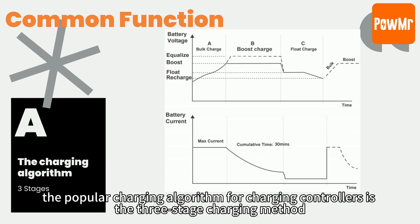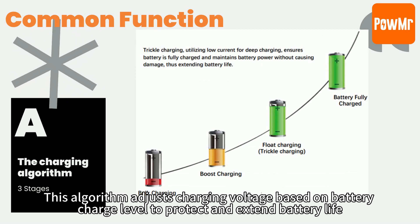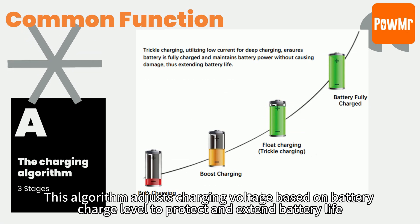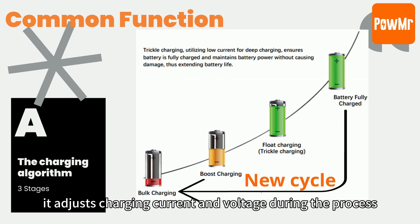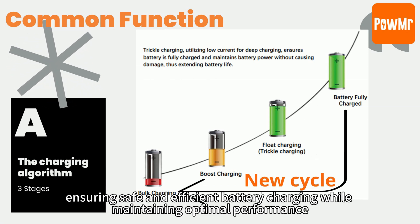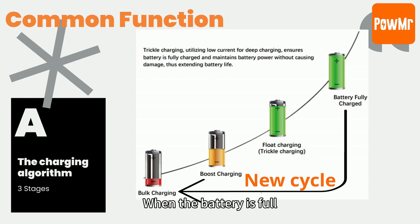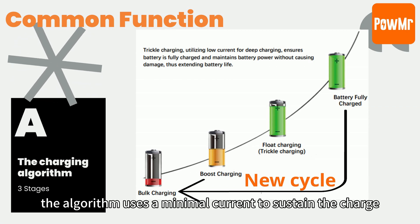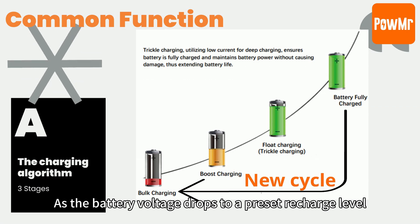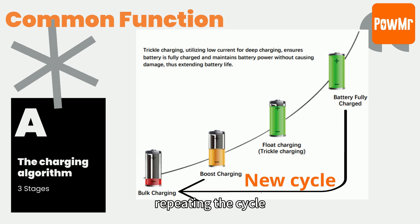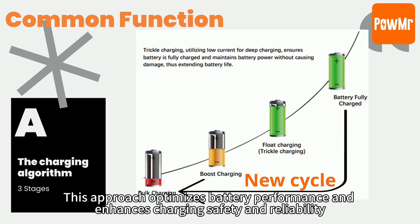The popular charging algorithm for charging controllers is the three-stage charging method. This algorithm adjusts charging voltage based on battery charging level to protect and extend battery life. By presetting charging voltage, it adjusts charging current and voltage during the process, ensuring safe and efficient battery charging while maintaining optimal performance. When the battery is full, the algorithm uses minimal current to maintain the standard charge. As the battery voltage drops to a preset recharge level, it enters a new charging phase, repeating the cycle. This approach optimizes battery performance and enhances charging safety and reliability.